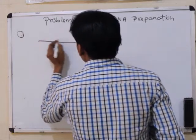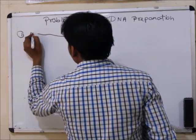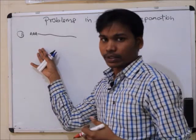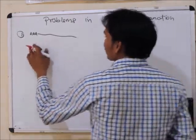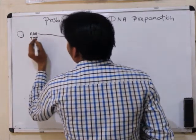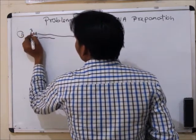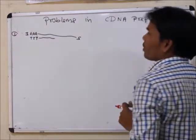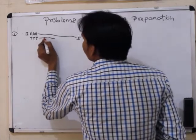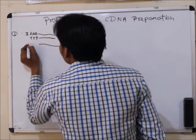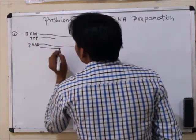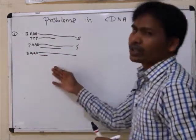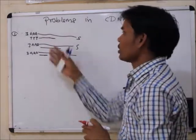After cDNA preparation, suppose that this is the mRNA containing poly-A tails. The reverse transcriptase has low processivity, meaning the polymerase remains poorly attached to the template. Because of this low processivity, when the oligo-dT primer binds, the reverse transcriptase may stop early and cannot synthesize the whole full-length cDNA using the mRNA as template.